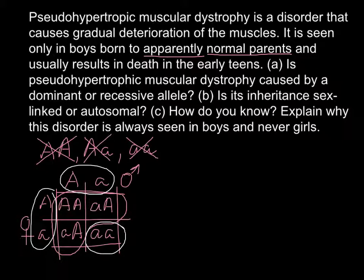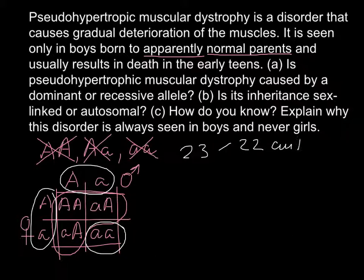What we are left with is only one possibility — that this is a sex-related disease. Humans have 23 pairs of chromosomes, 46 total, with 22 pairs being autosomes and one pair being sex chromosomes.